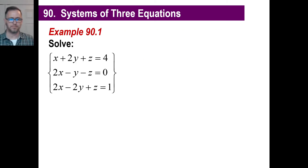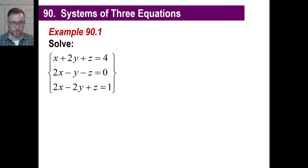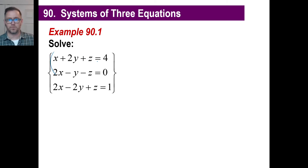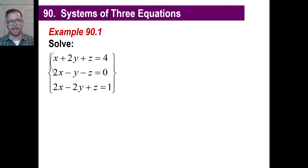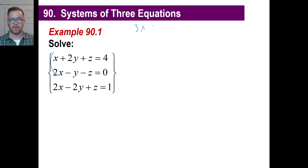Let's pause and copy this down. Now we're going to take two of those equations — it doesn't matter which ones — and eliminate one of the variables. Let's just take the first two, because it looks like you can just add those down and get rid of the z's. If you add straight down, the plus z and the negative z are going to eliminate. So if you add down, you have 3x, and then plus a y. Don't forget the four plus the zero. Alright, that's your first equation.